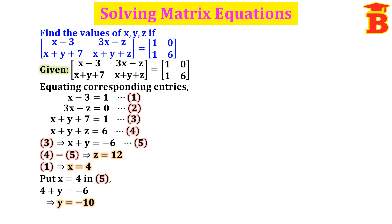Finally, write the answer: x is equal to 4, y equal to minus 10, and z equal to 12. We can check the answer by substituting the values in the given equation. If we put x equal to 4, then 4 minus 3 equals 1, and the right side also has 1 in the same position — so the answer is correct.